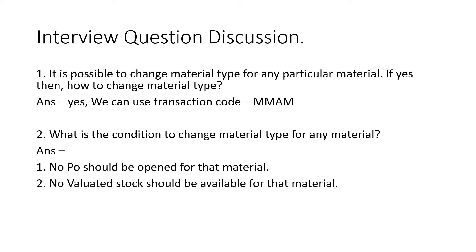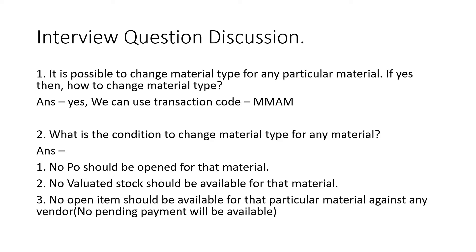The second condition is there should be no evaluated stock available in the material master — if stock is available in inventory, the system will not allow you to change the material type. Third, there should be no open items against any vendor, meaning there should be no payment pending against the specific material to a vendor. If payment is pending, the system considers it open and will not allow the change.